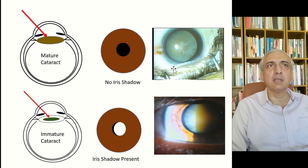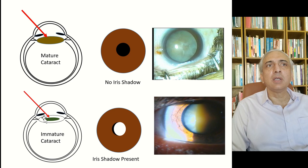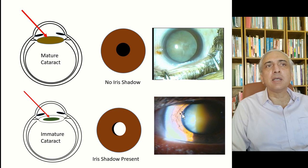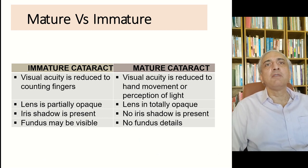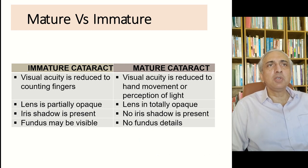The iris shadow is a common sign of immature senile cataract. When a light is shone from the side onto the iris, it casts a shadow on the lens. In a mature cataract there is no iris shadow because the lens is totally opaque and the iris is near the lens surface. In an immature cataract, there is a space between the nucleus and capsule, so the light creates a black crescent — the iris shadow — in that space.